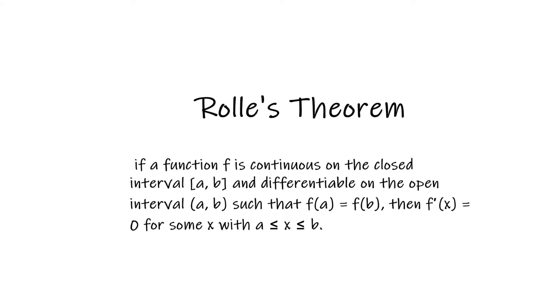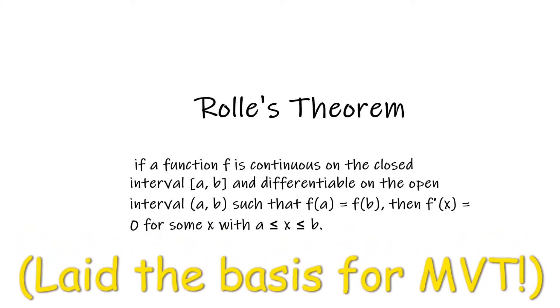which states that a function f continuous on the closed interval a to b and differentiable on the open interval from a to b, such that f of a is equal to f of b, then f prime of x is equal to zero for some value of x between a to b. In fact, this theorem was the precursor to the mean value theorem. Additionally, the mathematician Bernoulli introduced the term integral in 1690.